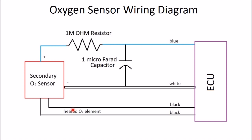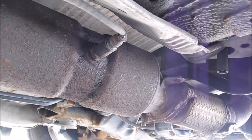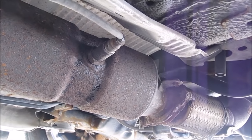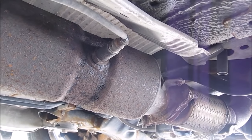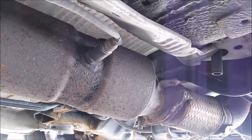These two black wires you don't want to touch — that's for your heated O2 elements. This here is the oxygen sensor, bank 1 sensor 2, on the catalytic converter.